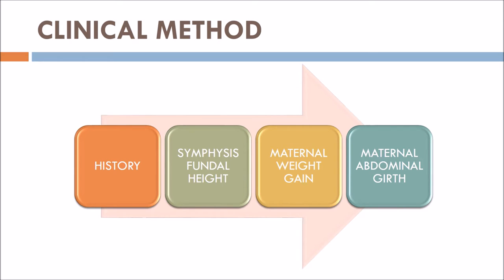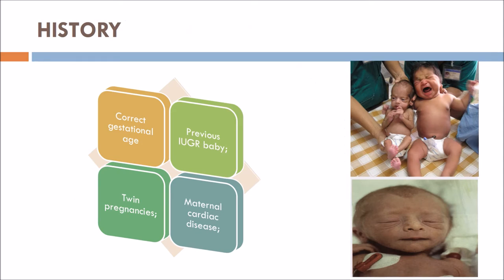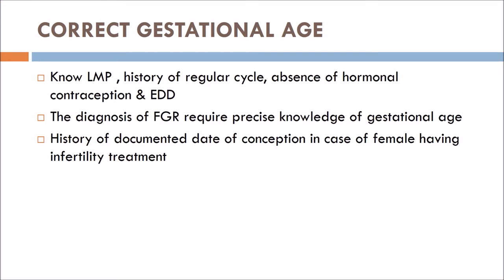In the clinical method, there are history taking and symphysis fundal height measurement, maternal weight gain, and maternal abdominal girth measurement. In history taking, correct gestational age is essential, along with any history of a previous IUGR baby, twin pregnancy, and any history of maternal cardiac disease. To confirm gestational age, we need to know the LMP, history of regular cycle, absence of hormonal contraception, and the EDD. The diagnosis of FGR requires precise knowledge of gestational age, including documented date of conception in cases of infertility treatment.